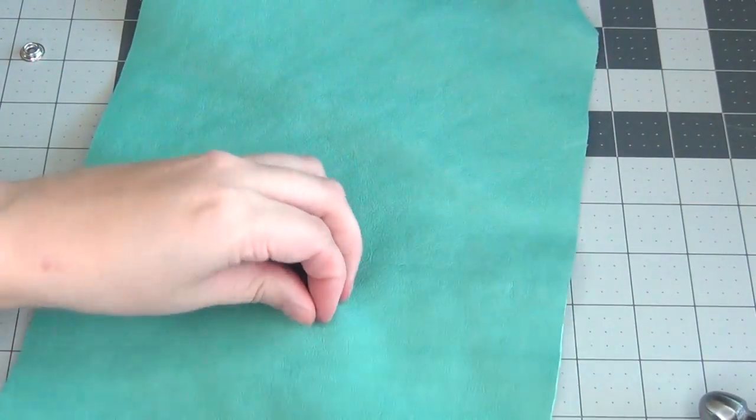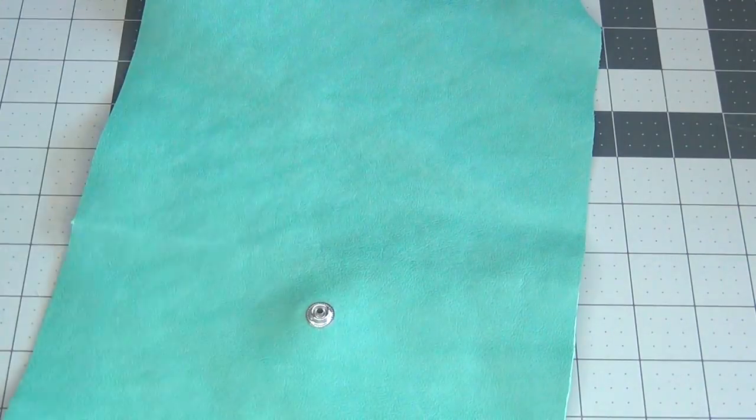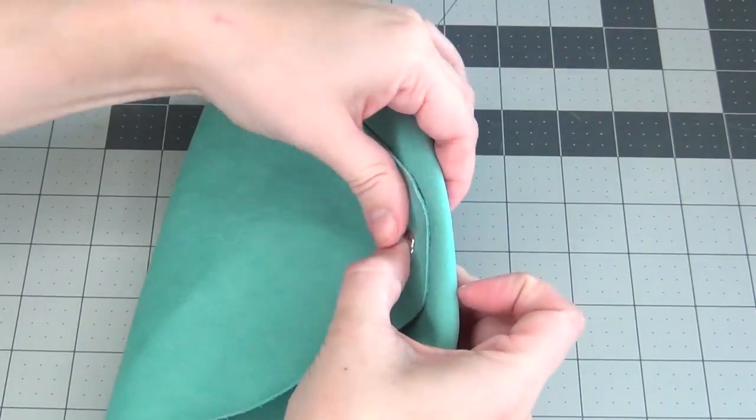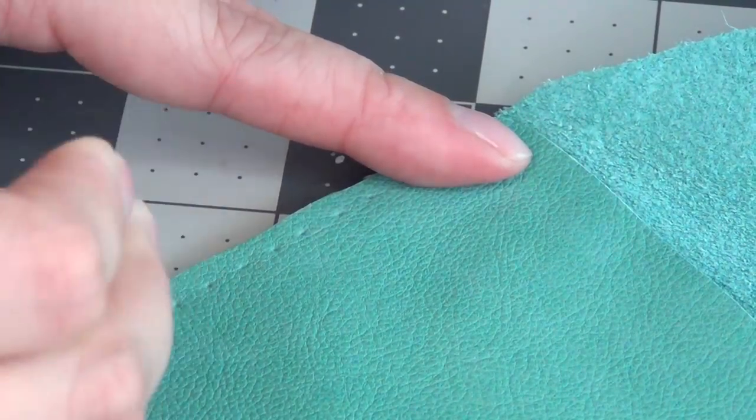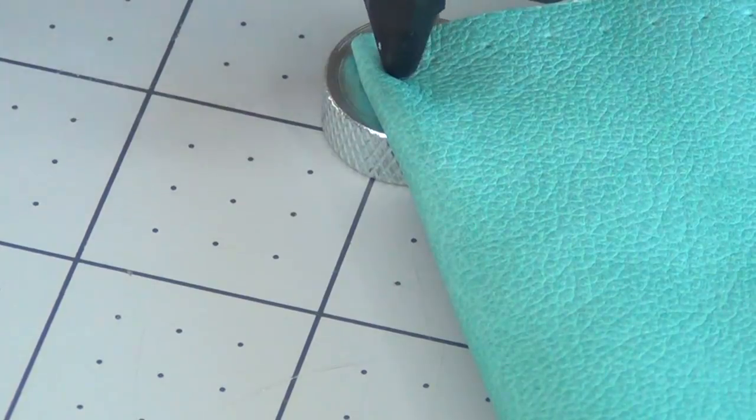Make sure that you work slowly and don't install one of the snaps backwards. There's nothing worse than having to ruin a project because you got the snap in the wrong way. Then once it's in place, secure the snap and begin marking where you're going to stitch the sides of your bag.